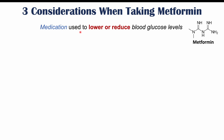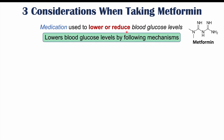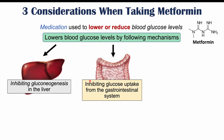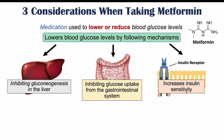Metformin is a medication used to lower or reduce blood glucose levels. It's used to treat type 2 diabetes, but also other conditions like polycystic ovary syndrome. With regards to its ability to lower blood glucose, it does this by the following mechanisms: it inhibits gluconeogenesis in the liver — that's the production of glucose from non-glucose substrates. It's also involved in inhibiting glucose uptake from the gastrointestinal system, so from the small intestine it can help reduce the absorption of glucose. And it also increases insulin sensitivity through increasing the sensitivity and activation of the insulin receptor.